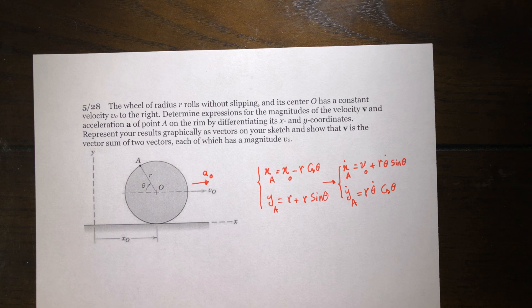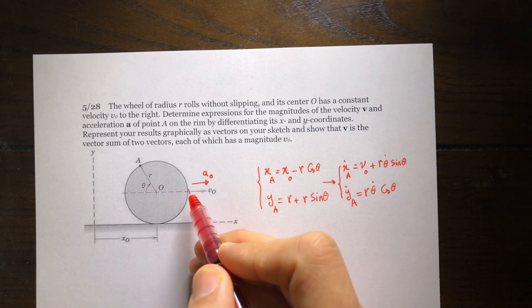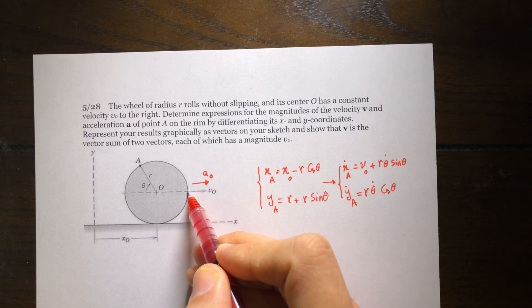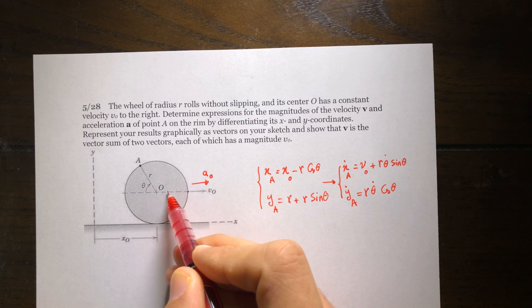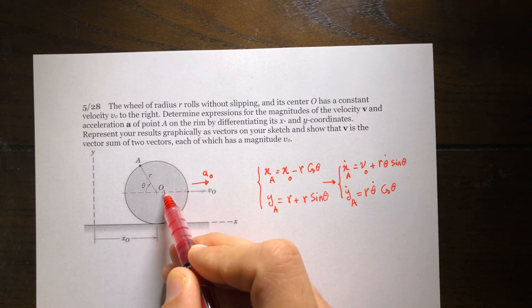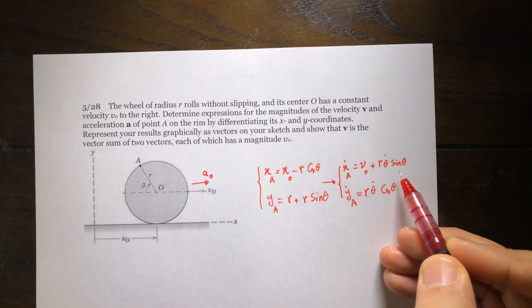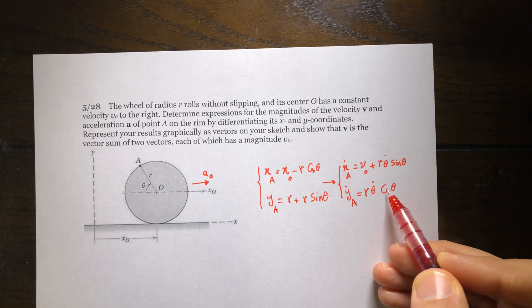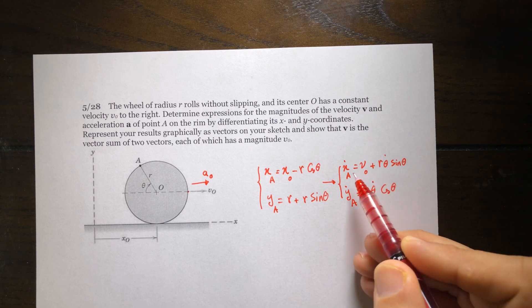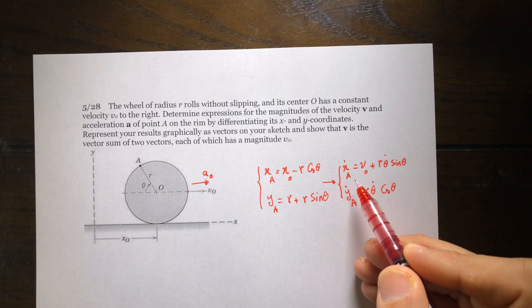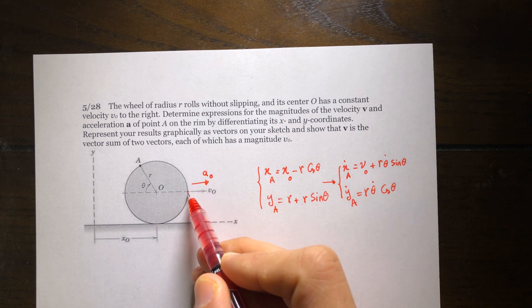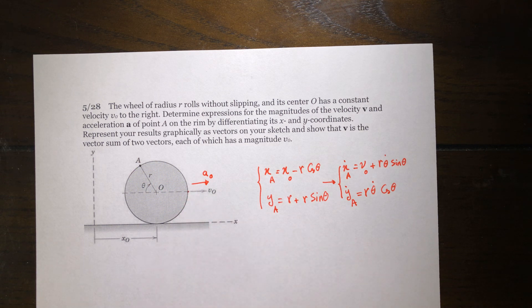Using these equations, I can find the velocity of any point on the circumference of the disk. For example, for the point where theta equals 180 degrees (or pi), I replace theta with 180 degrees in these equations to find ẋ and ẏ of that point. The same approach applies to any other point.